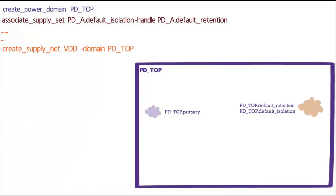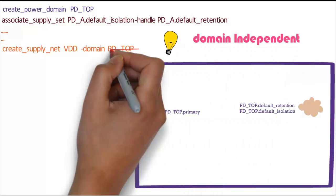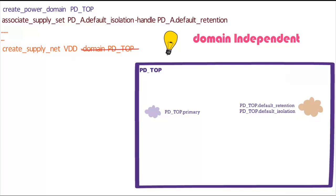Let's define the supply nets. First, we create the supply net VDD -domain PD_TOP. Oops, the supply net has to be domain independent. Let's get rid of it. Then we create the supply port VDD and connect the supply net VDD to supply port VDD.